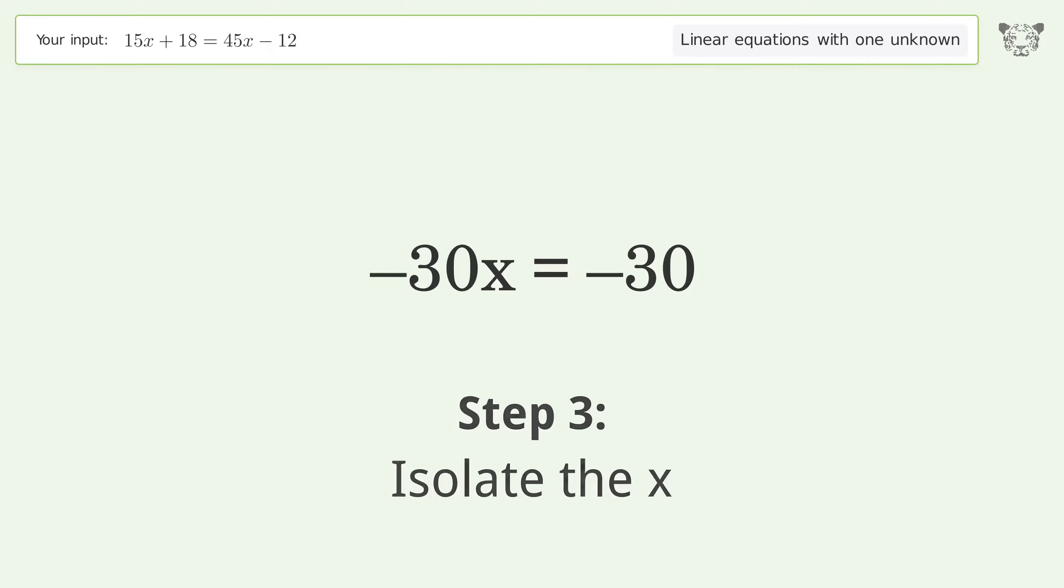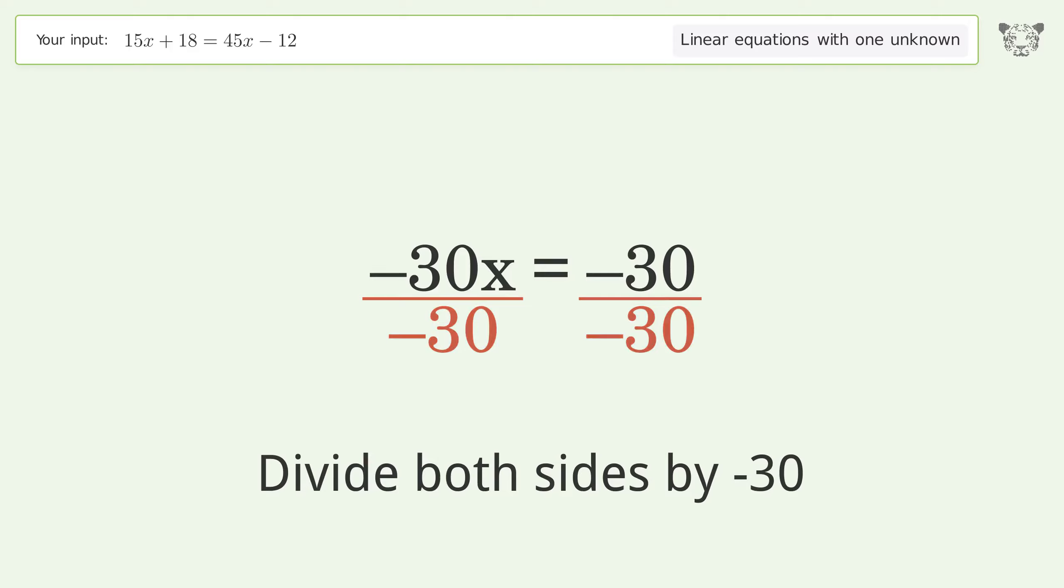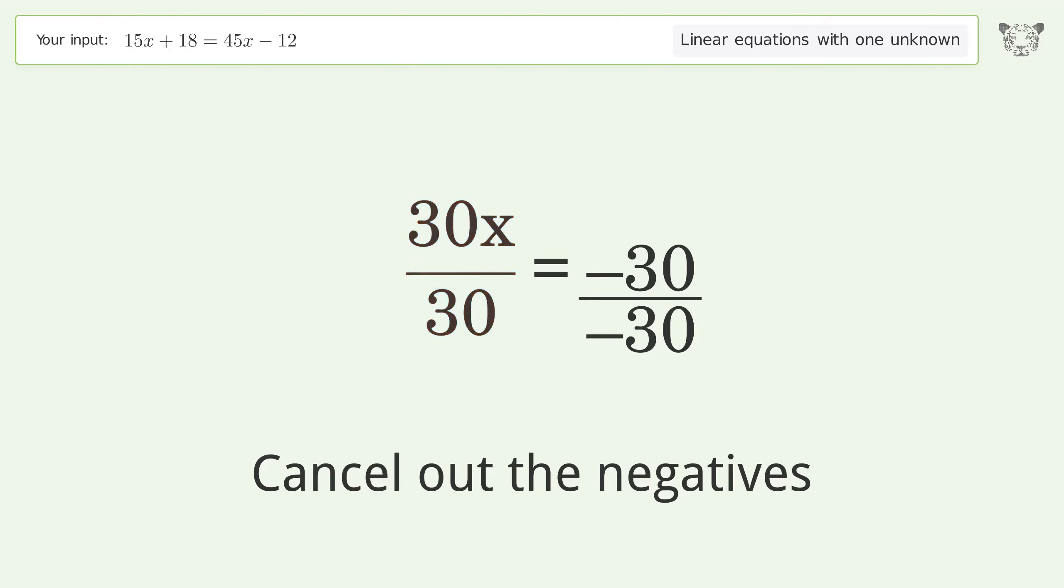Isolate the x. Divide both sides by negative 30. Cancel out the negatives. Simplify the fraction.